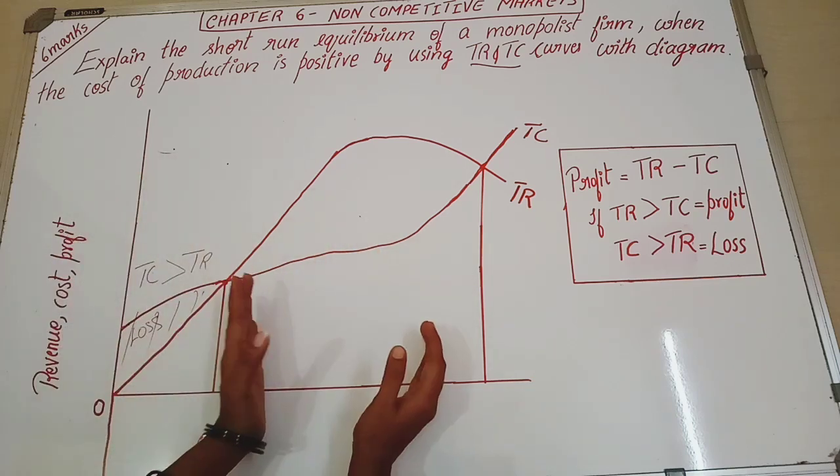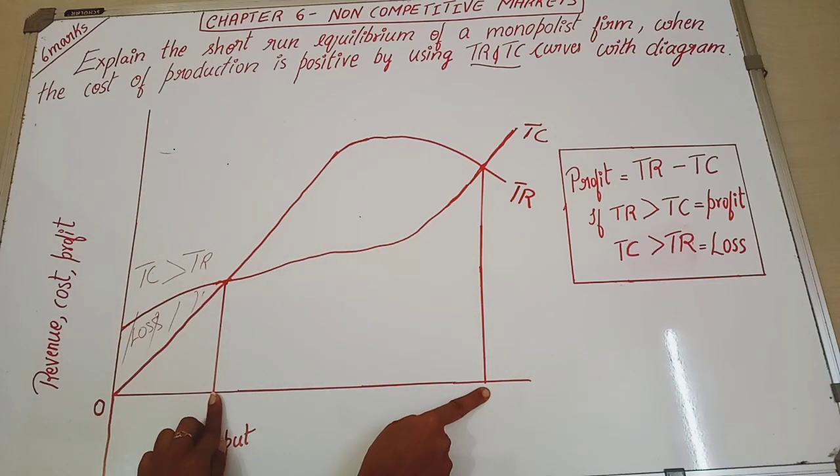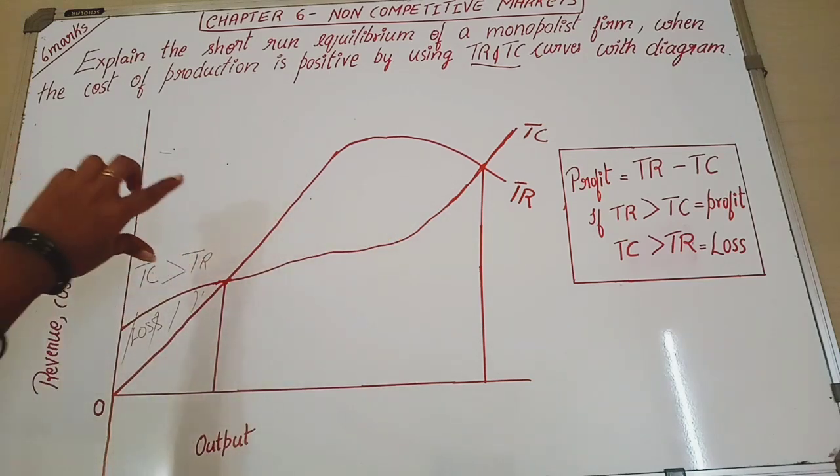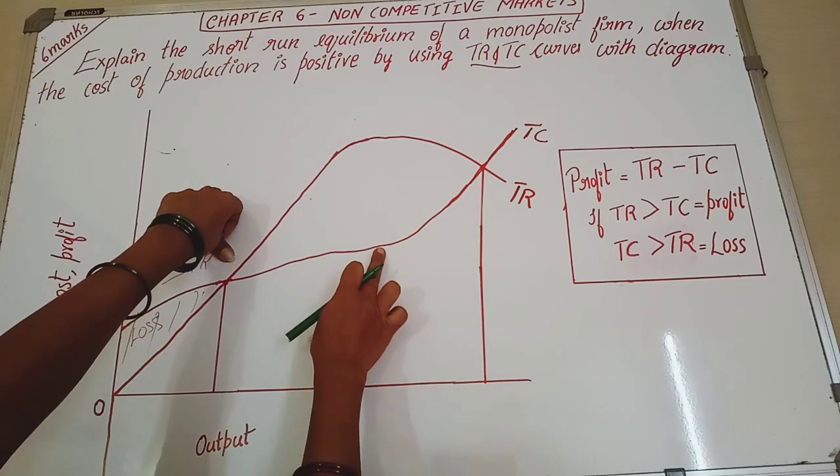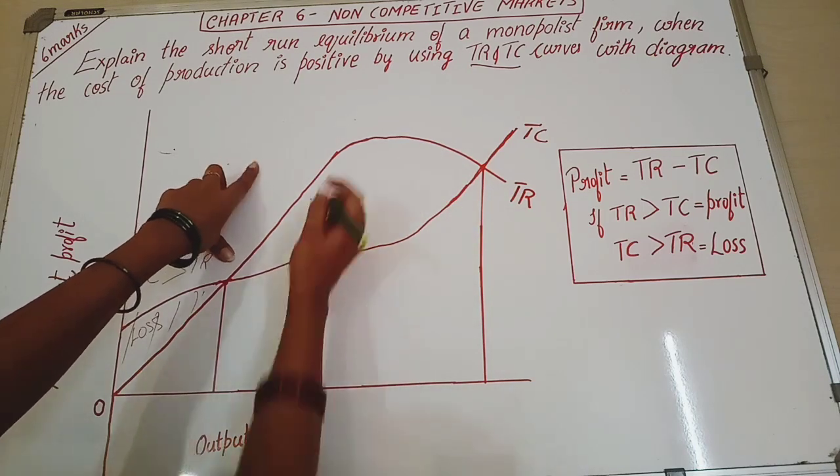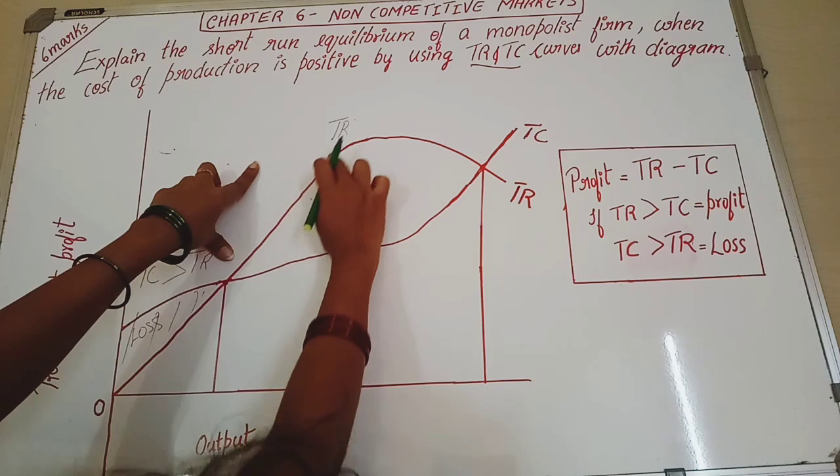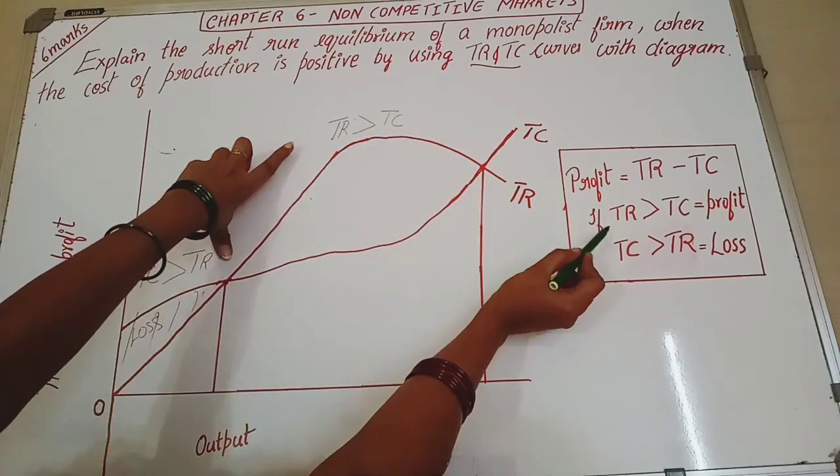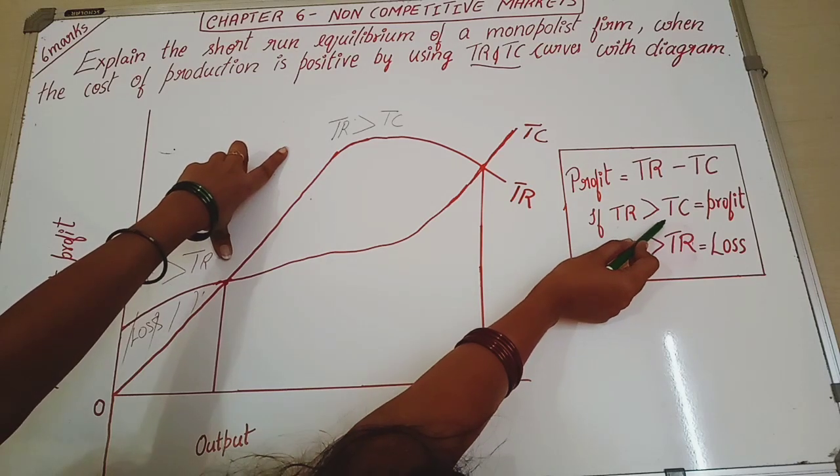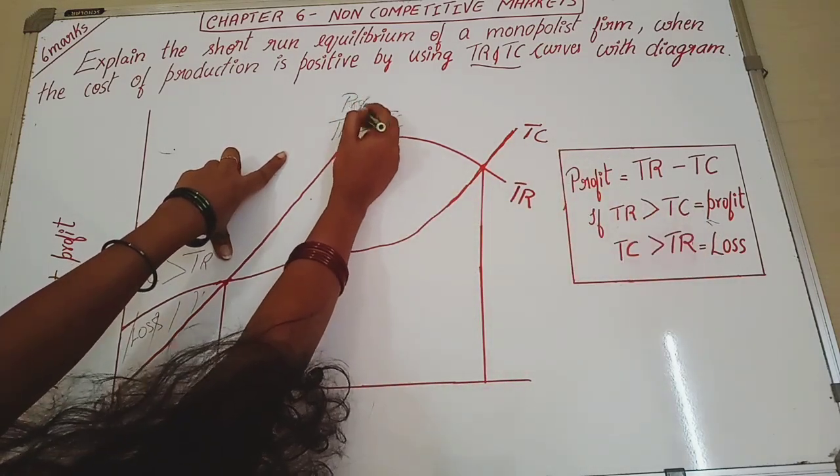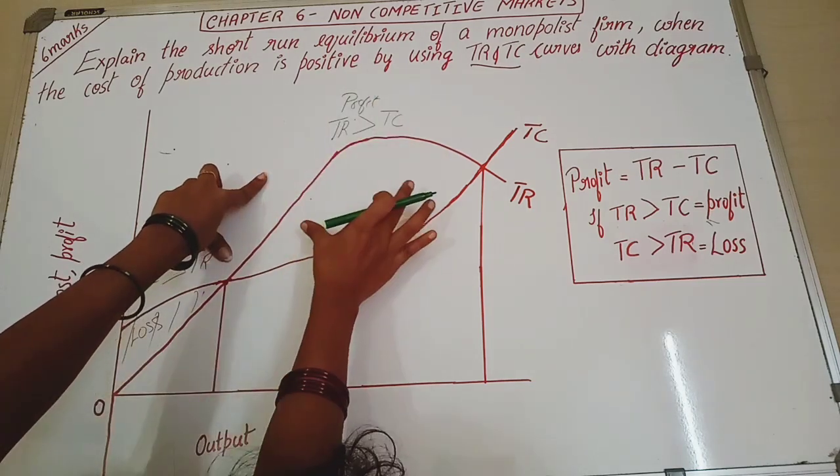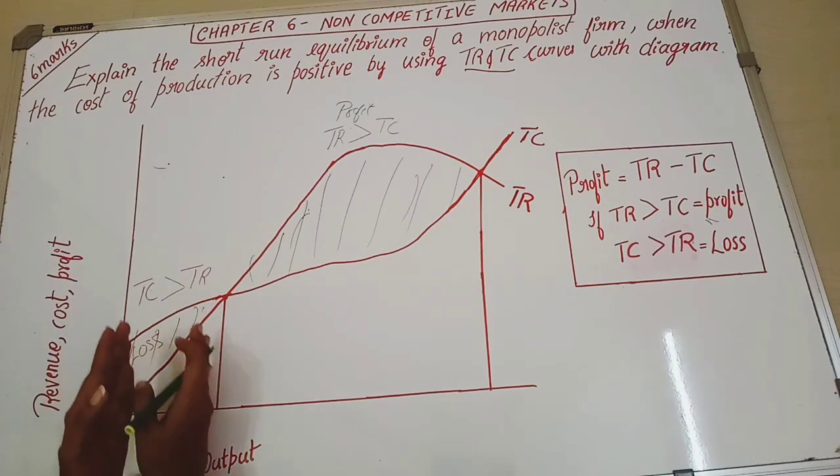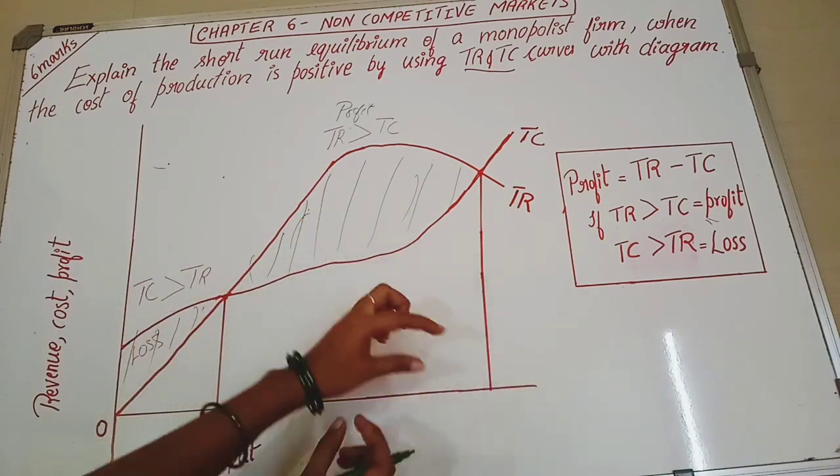Now we will draw the output lines. So your first output will be this intersection point. This is our last output. So at this point here, if you see, this is the total cost curve and this is the total revenue curve. So which is greater here? Total cost is greater than the total revenue. So this whole region is considered as loss.